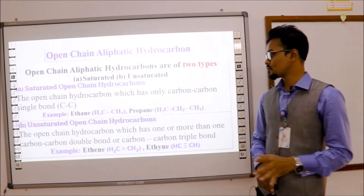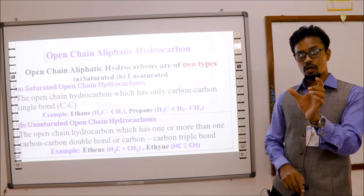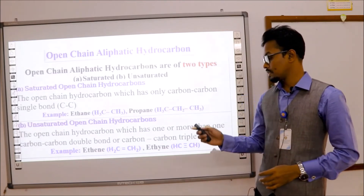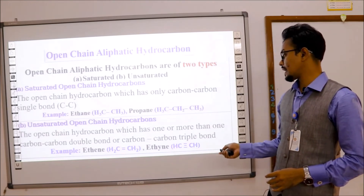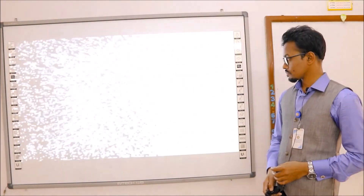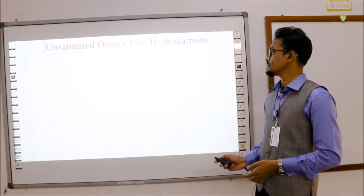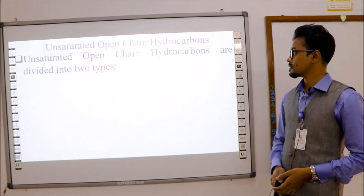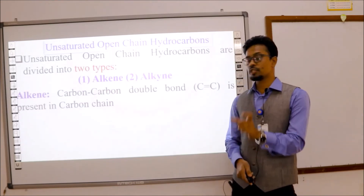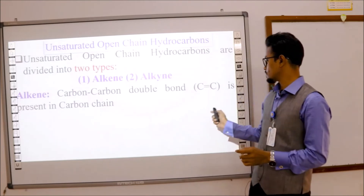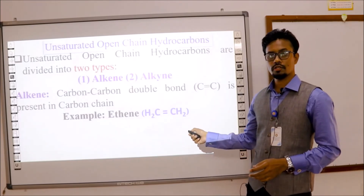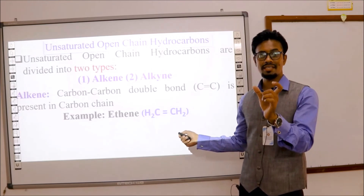Unsaturated open chain hydrocarbons are those which have one or more double or triple bonds in the carbon chain. Unsaturated hydrocarbons are divided into two types: alkene and alkyne. In alkene, a carbon-carbon double bond is present in the carbon chain. When you see a carbon-carbon double bond, it is an alkene — for example, ethene has a carbon-carbon double bond.